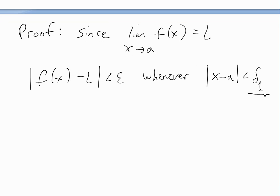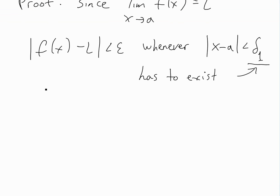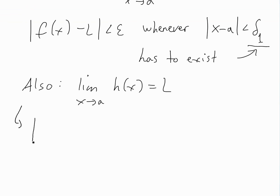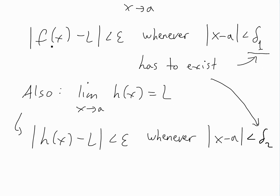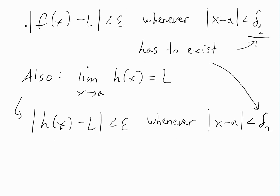So we need to find a separate delta one here; epsilon is any number greater than zero, and delta one has to exist — it has to exist if this limit is true, and we're given it's true. We're also given that the limit as x approaches a of h(x) equals L. So once again, we need the absolute value of h(x) minus L to be less than epsilon, whenever the absolute value of x minus a is less than delta two. This delta two has to exist for that limit to exist. We can rearrange these absolute values into an easier form using absolute value properties.